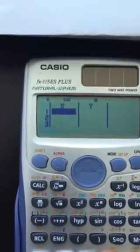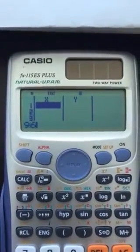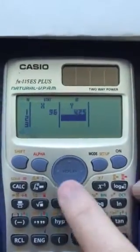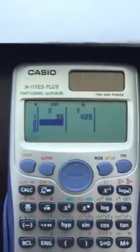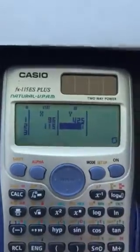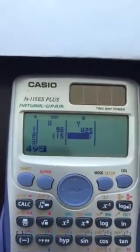And now that you have that, you want to input your information. 96 is our k value, our stopping site distance 425. Our second k value from our manual is 115, and our second stopping site distance is 495.